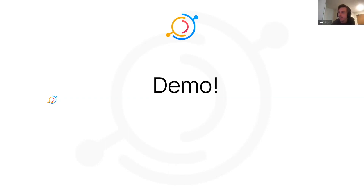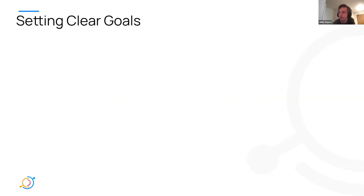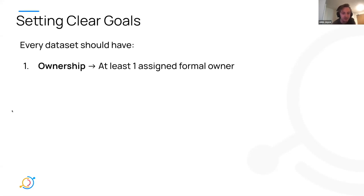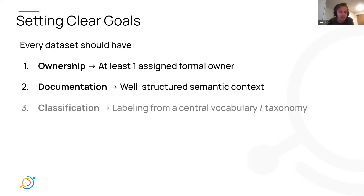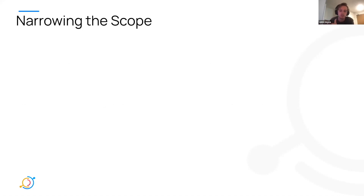Thanks, Maggie. What we're going to do now is look at a practical application of the steps that Maggie just introduced and see how Acryl Data Hub can help you, especially around automating some of the work involved. In the first step, we're going to set clear goals. We'll use the example of Long Tail Companions. Let's imagine we've set clear governance goals: every data set must have at least one owner assigned, well-structured semantic documentation describing the purpose of the data, and a classification — so labeling from a centrally managed taxonomy.